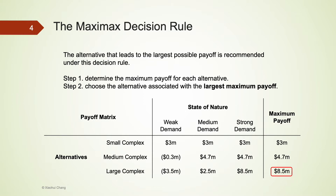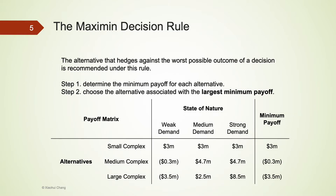In the second step, we choose and recommend the alternative associated with the largest maximum payoff. By following this rule, the company in our introductory example should build a large complex and expects a payoff of $8.5 million.